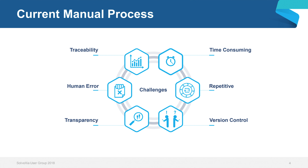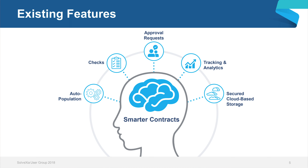With these business problems in mind, we developed the idea of a smart contract — an automated legal documentation process built using many of Solvexia's existing features. As a quick run-through, we have: auto-population, checks, approval requests, tracking and analytics, and secured cloud-based storage.